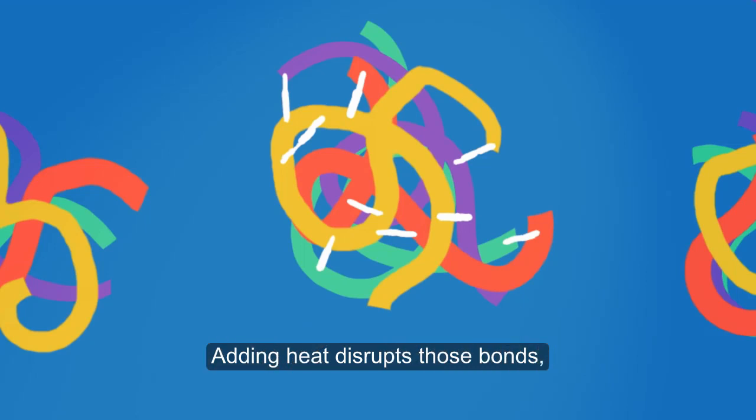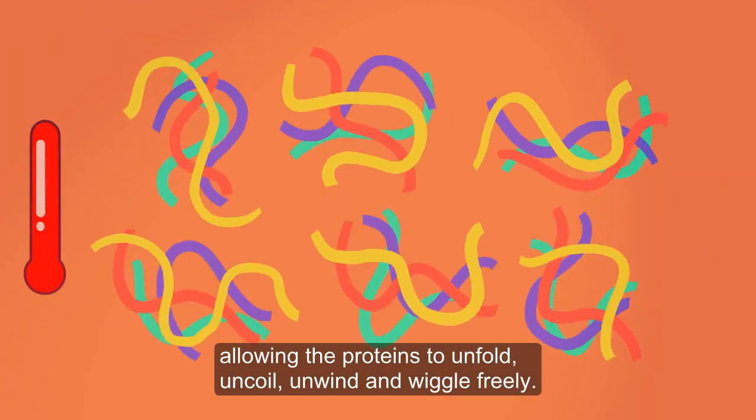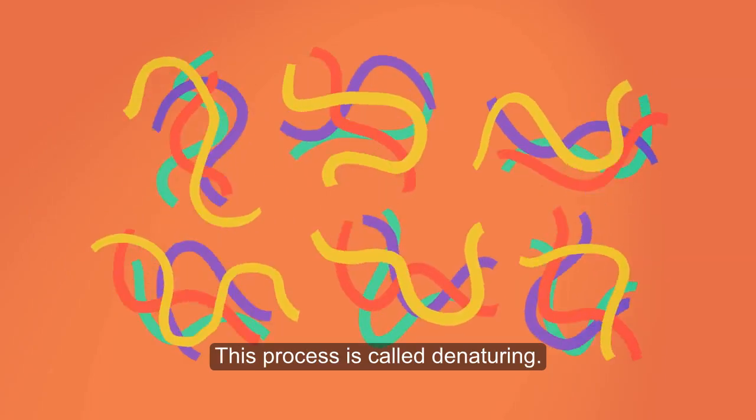Adding heat disrupts those bonds, allowing the proteins to unfold, uncoil, unwind, and wiggle freely. This process is called denaturing.